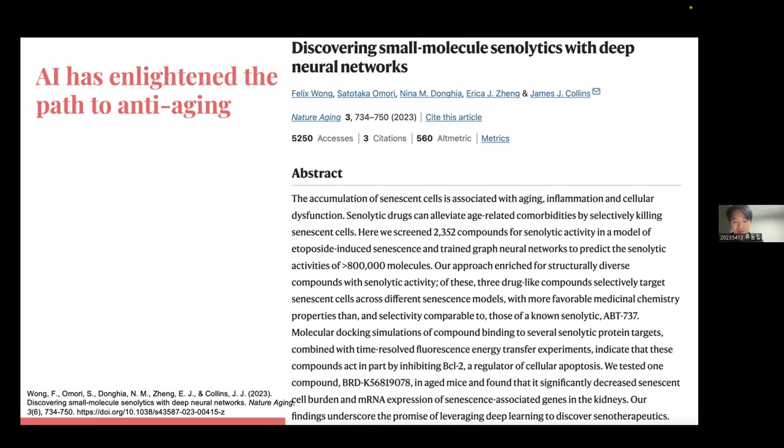The Hayflick limit, a terminology in biology, says that the average cell will divide around 50 times before reaching a stage known as senescence. As the cell divides, the telomeres on the end of the linear chromosome get shorter. When it becomes completely gone, the cell will not divide again. It is aging, a senescent cell.